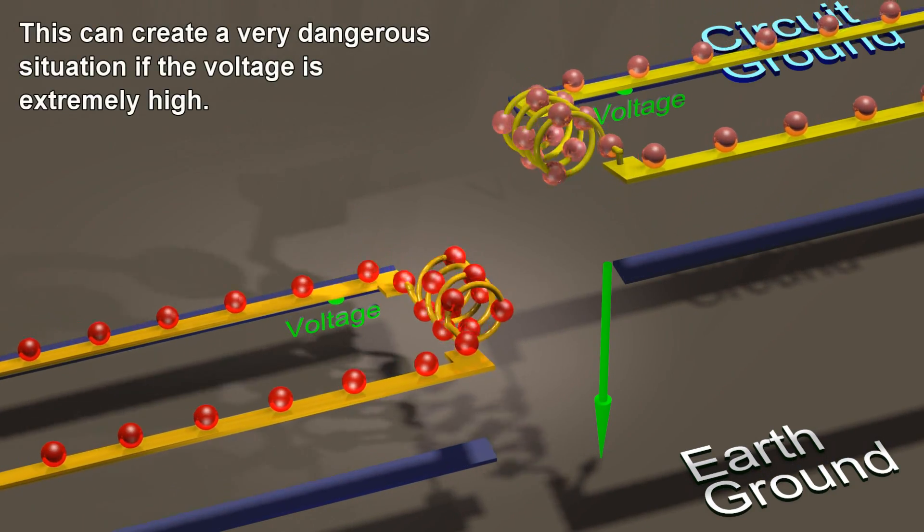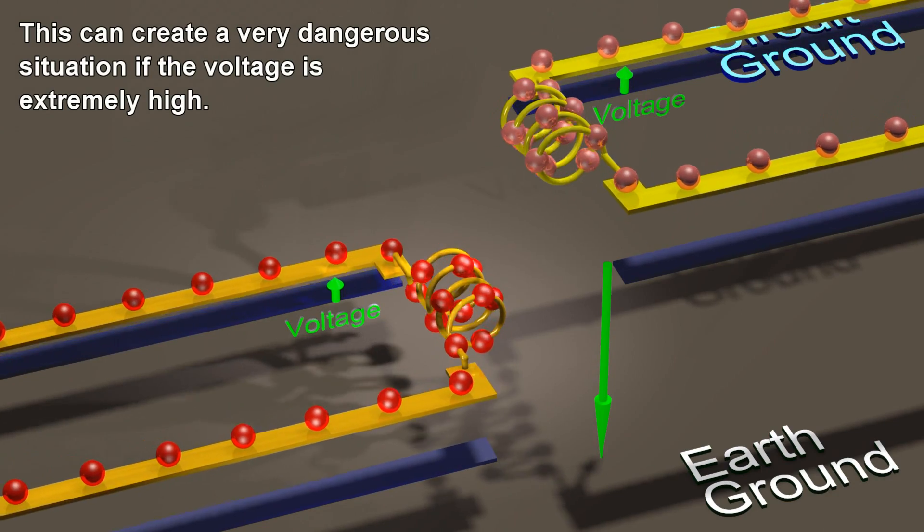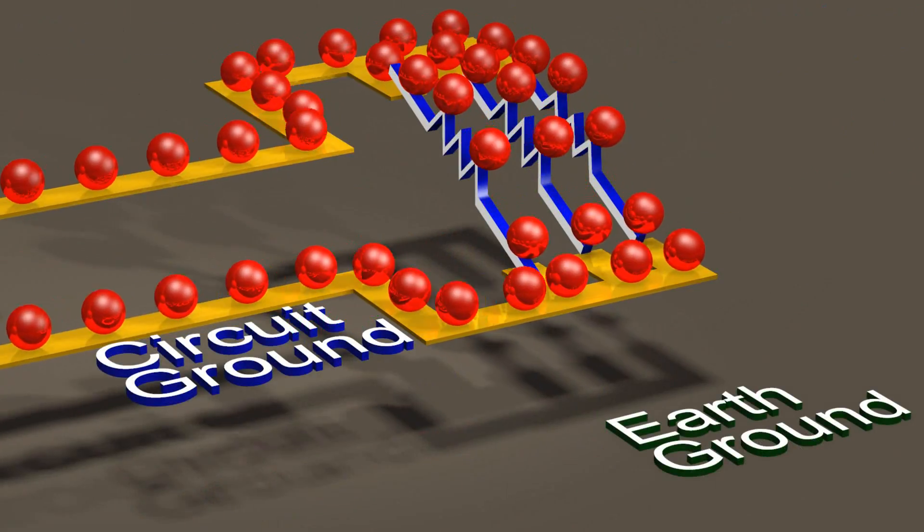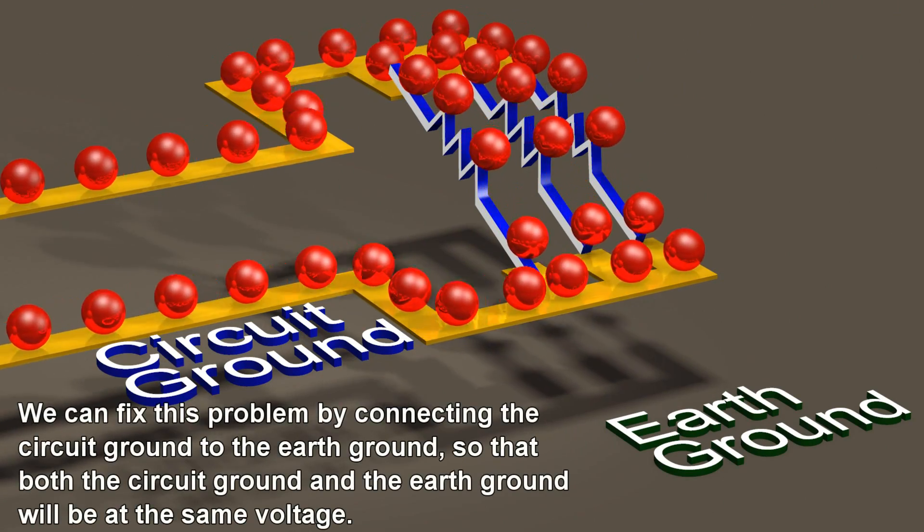This can create a very dangerous situation if the voltage is extremely high. We can fix this problem by connecting the circuit ground to the earth ground, so that both the circuit ground and the earth ground will be at the same voltage.